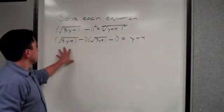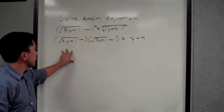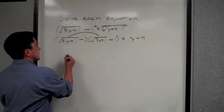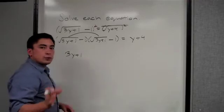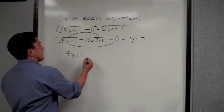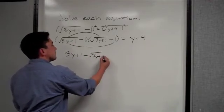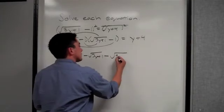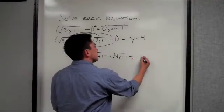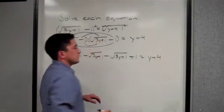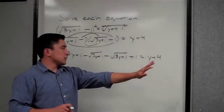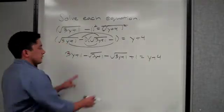We use the FOIL method. First: √(3y+1) times √(3y+1) just gives us 3y plus 1, since a root times itself cancels the root. Outer: negative √(3y+1). Inner: another negative √(3y+1). Last: negative 1 times negative 1 is positive 1. That equals y plus 4 on the right. Now I'll move everything without a root to the right side and combine the two root terms.